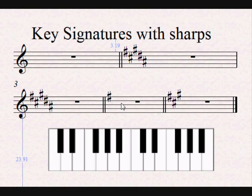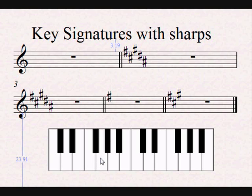Suppose you want to work out the key signature for just one sharp. That sharp is affecting the F sharp. Go to F sharp and move one step to the right; we find it is written in G major, or the relative minor of G major — 1, 2, 3, 4 — E minor. So this is written either in G major or E minor.